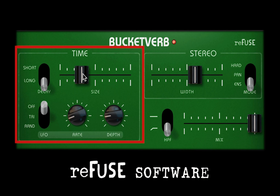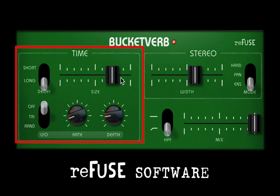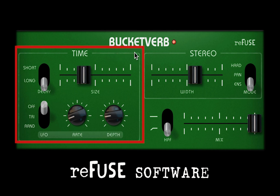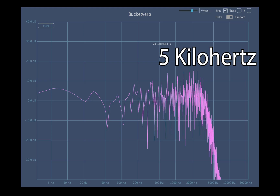As with any of the sliders or knobs in BucketVerb, you can command-click on macOS or control-click on Windows to nudge things along a finer range. Note that, like the original MN3011 chip, changing to a longer time with the size parameter in BucketVerb adjusts the sampling rate down to 10 kHz. To compensate for this, the wet output of BucketVerb slopes off starting at 5 kHz.